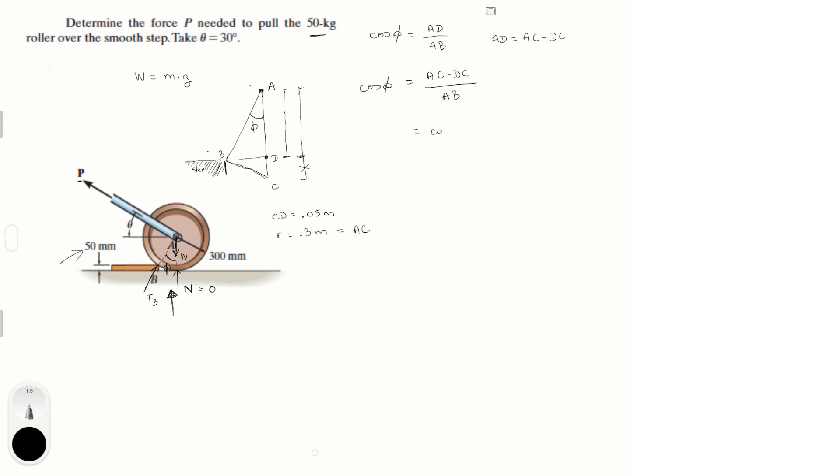We have that the cosine inverse of AC minus DC, which is 0.3 minus 0.05 all over 0.3 again, is equal to phi. And if we solve for phi, we're going to get that this is equal to 33.56 degrees.